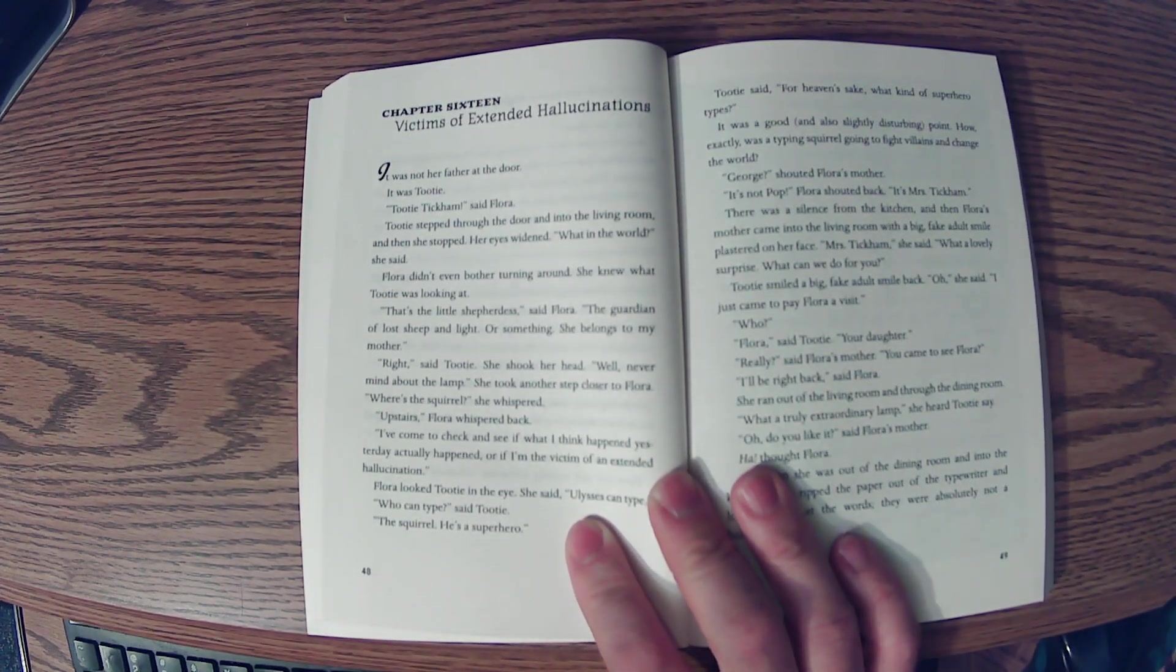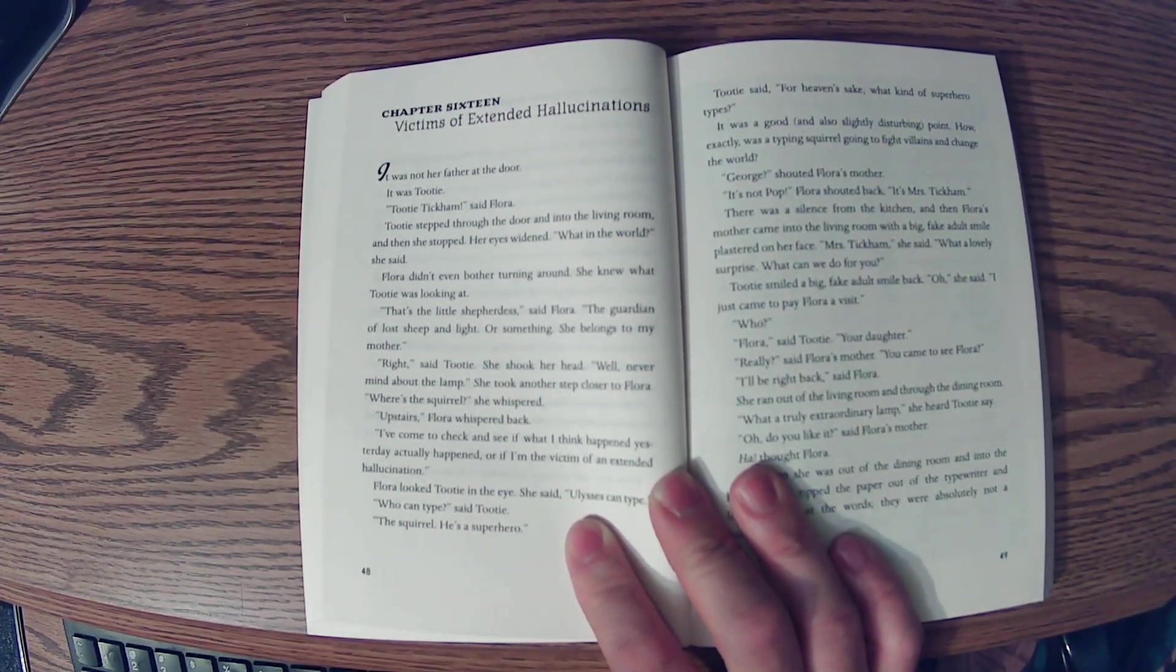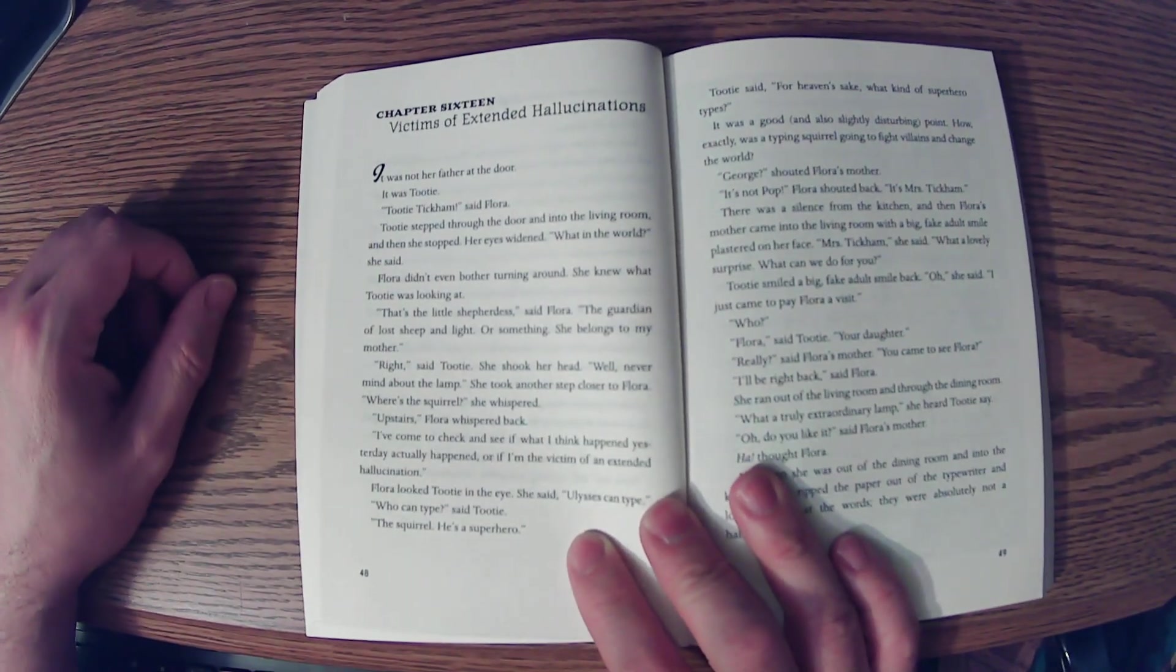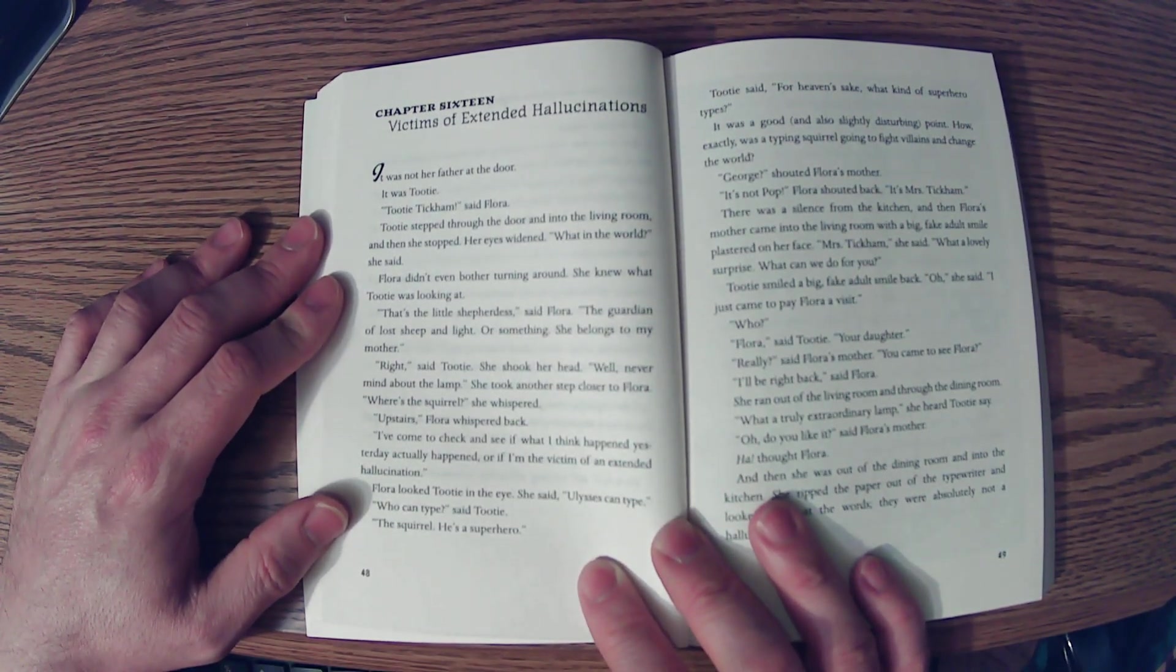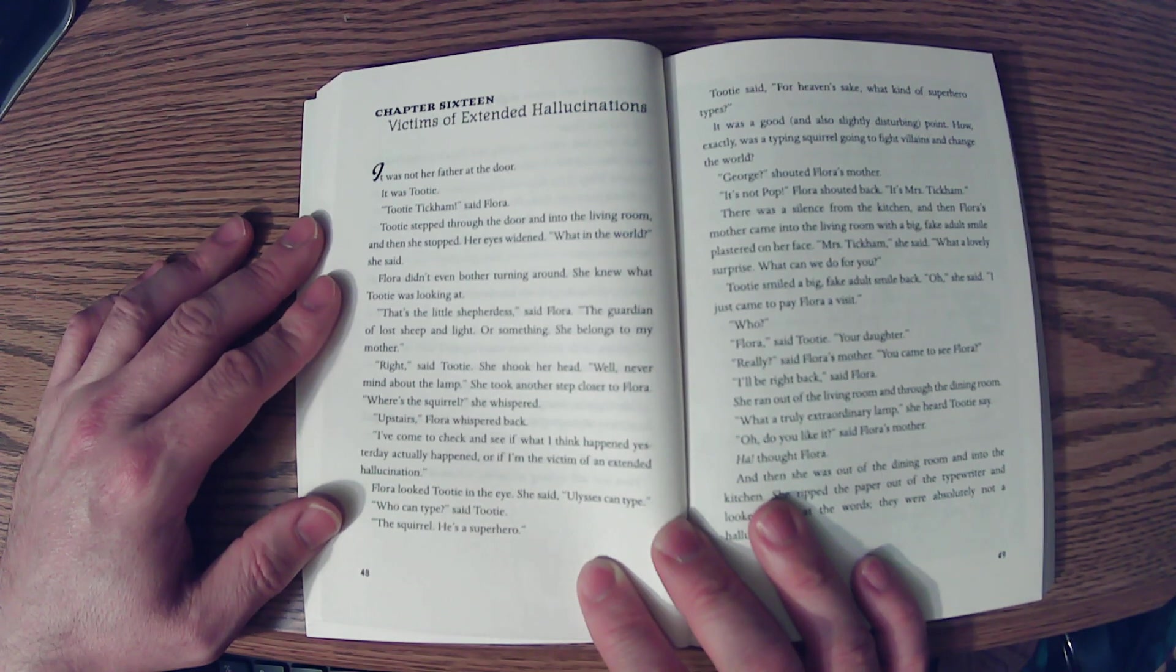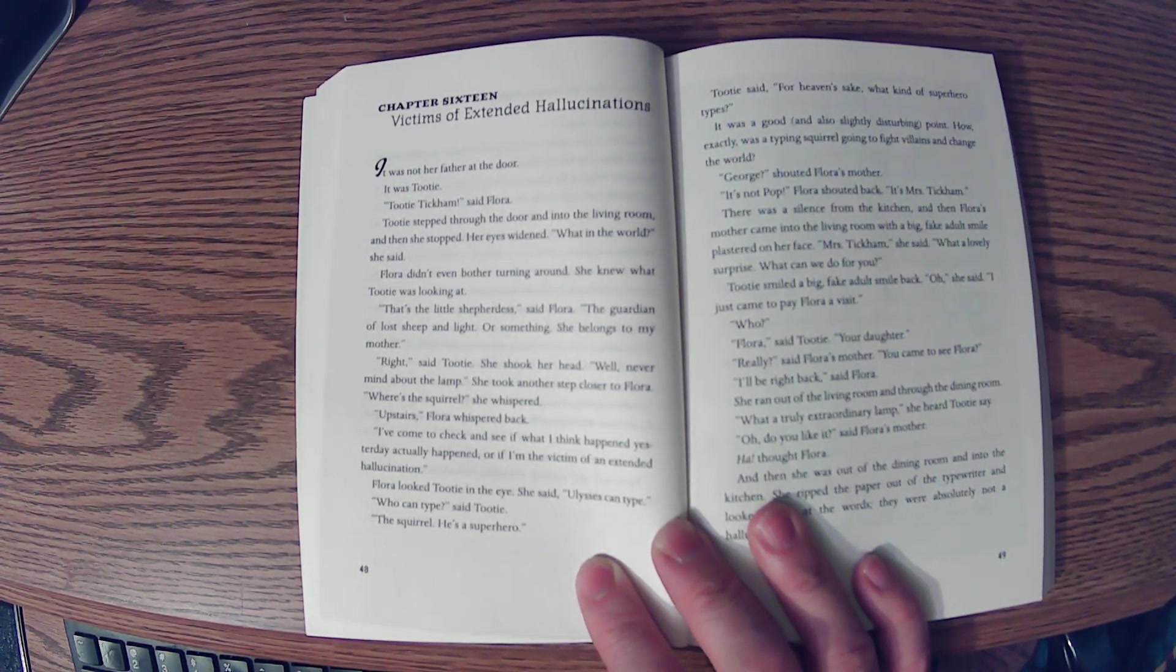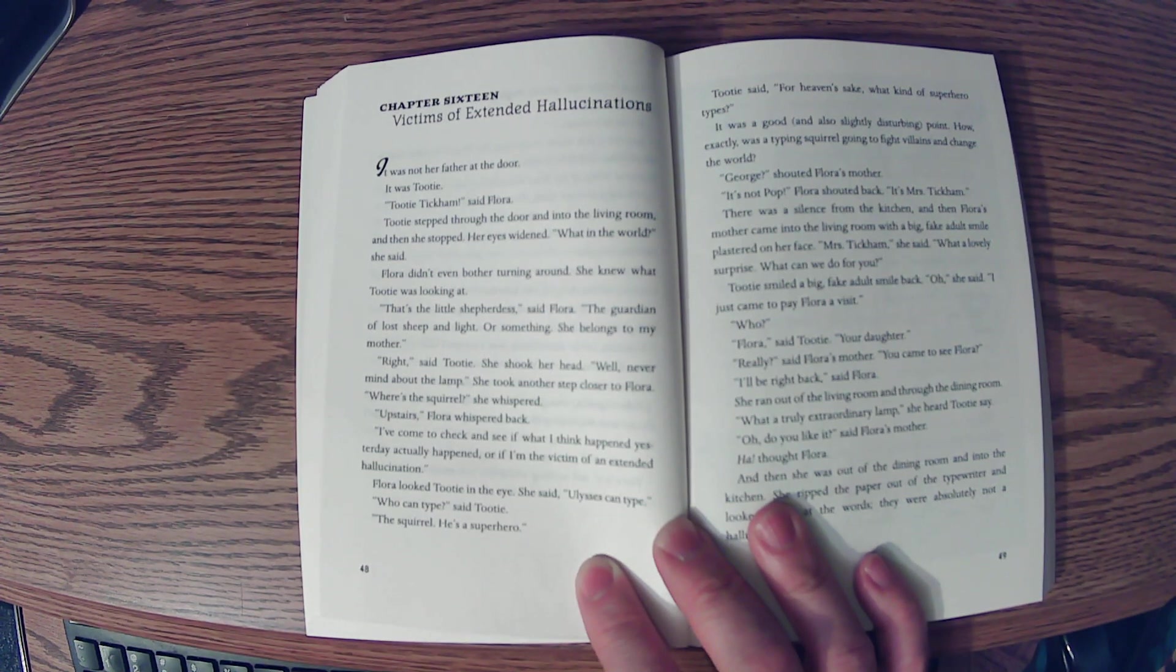Well, never mind about the lamp, and she took another step closer to Flora. Flora, where's the squirrel, she whispered. Upstairs, Flora whispered back. I've come to check and see if what I think happened yesterday actually happened, or if I'm the victim of an extended hallucination. Flora looked Tootie in the eye. She said, Ulysses can type. Who can type, said Tootie? The squirrel. He's a superhero. Tootie said, for heaven's sake, what kind of superhero types? It was a good and also slightly disturbing point. How exactly was a typing squirrel going to fight villains and change the world?